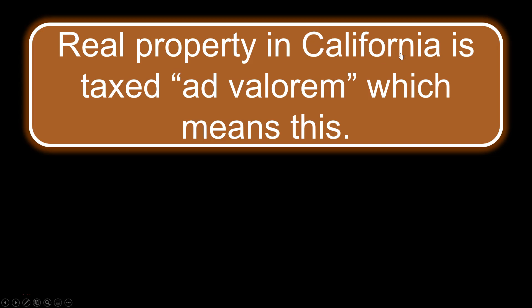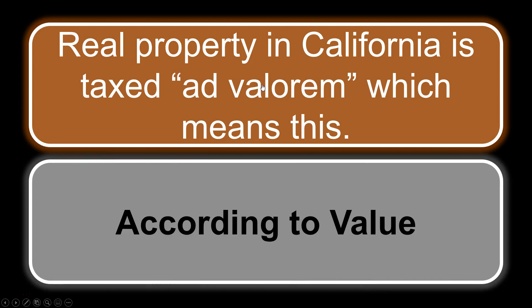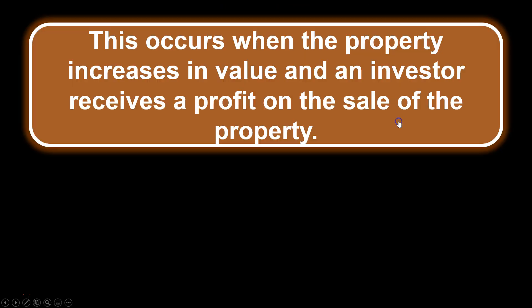Real property in California is taxed ad valorem, which means 'according to value.' Real property is taxed in California according to its true value — ad valorem. This occurs when the property increases in value and an investor receives a profit on the sale of the property — that is called a capital gain.